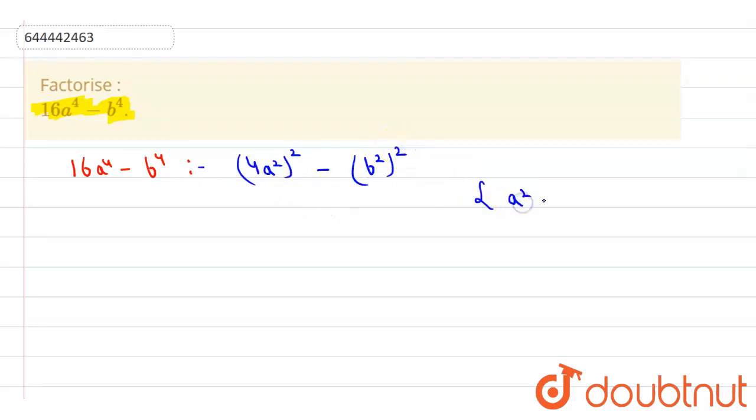As we know, a² - b² = (a - b)(a + b), we will use it.